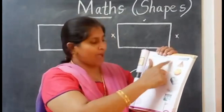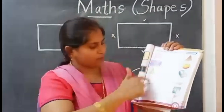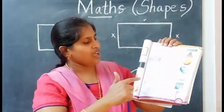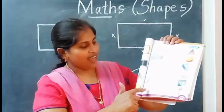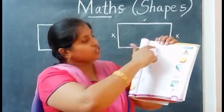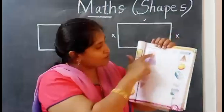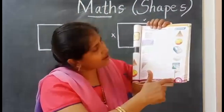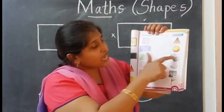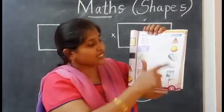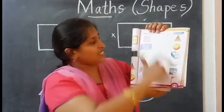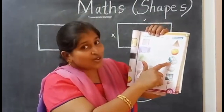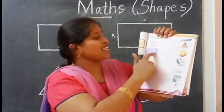Color the shapes and match them. Here there are shapes — square, rectangle, triangle, circle, and oval. You should color all of them and match. See this is a square — which object looks like a square? This window: all the sides are the same, so match.